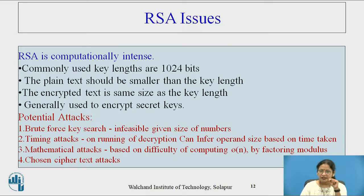Use of a public key encryption system for distribution of private key. Now what are the potential attacks possible on RSA algorithm? Brute force key search, infeasible given size of numbers. Timing attacks on the running of decryption can infer operand size based on time taken. The third one is mathematical attacks, based on difficulty of computing phi of n by factorizing modulus. And chosen ciphertext attacks.